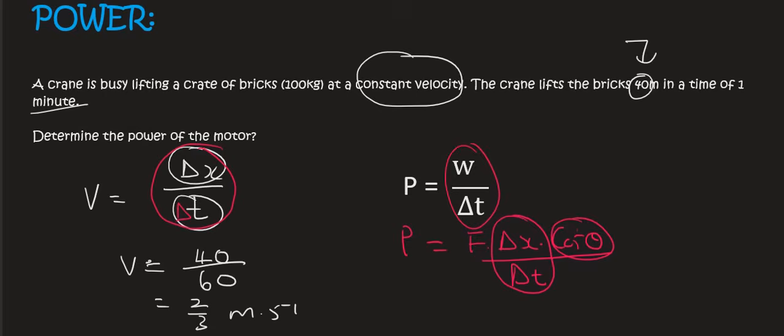Cos theta is always going to be cos zero when you're looking at a motor, because it's always going to be going in the same direction as motion. And so we sort of ignore that, because it just becomes 1. And so power is equal to force times by change in x over change in time, which is just the velocity.